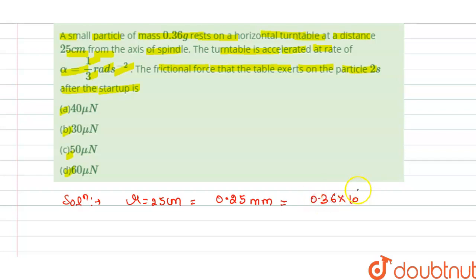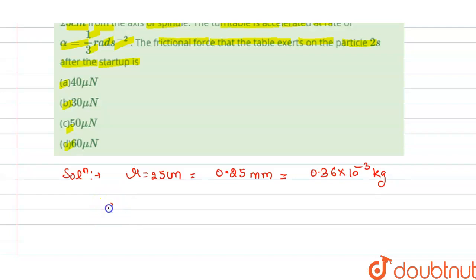So our radius is this, and tangential acceleration equals alpha r. We can write here alpha is given to us 1 by 3, and this is 0.25, so this is 0.8 meter per second square.